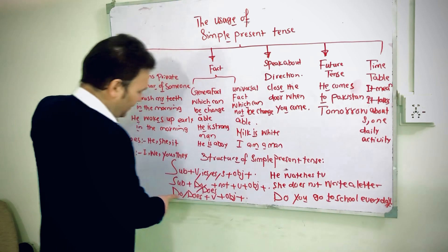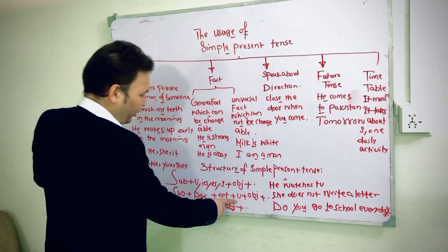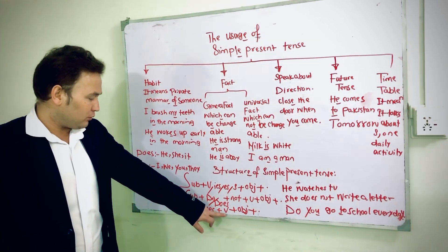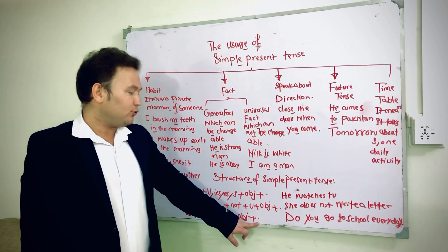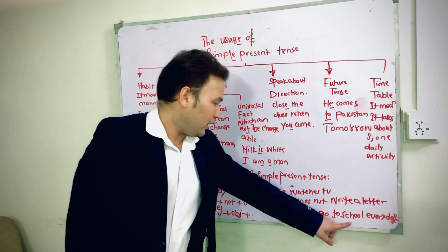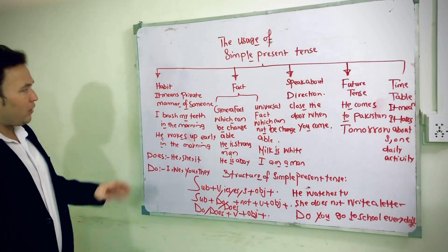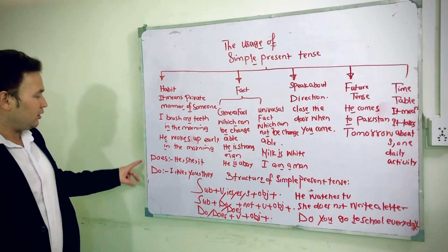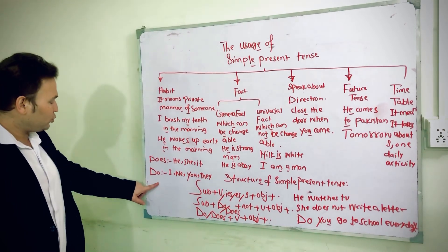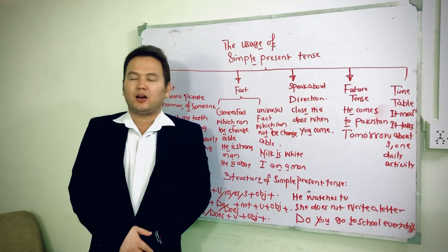For negative form: subject plus 'do/does' plus 'not' plus verb plus object. For example: 'He does not watch TV.' For question form: 'do/does' plus subject plus verb plus object — for example, 'Do you go to school?' Important note: 'does' is always used for he, she, and it; 'do' is always used for I, we, you, and they.